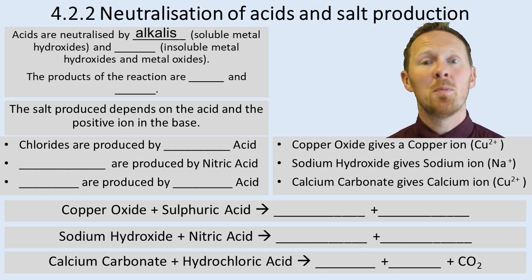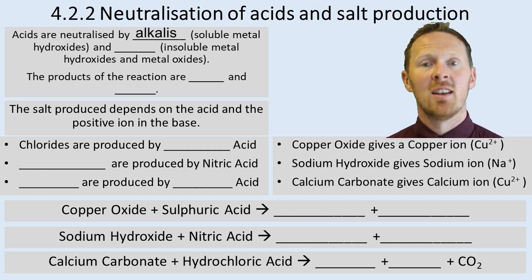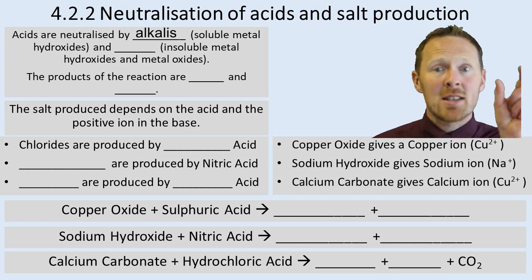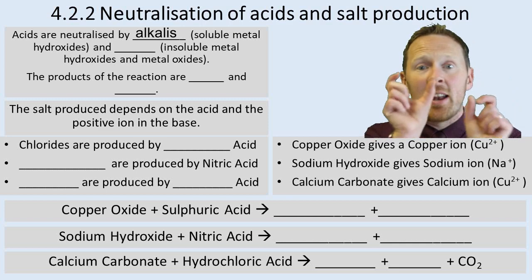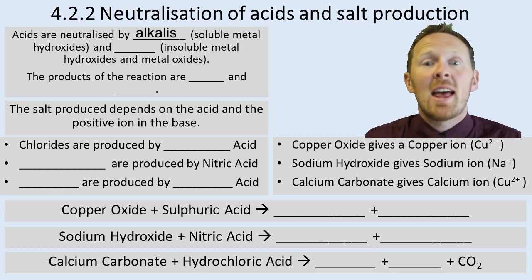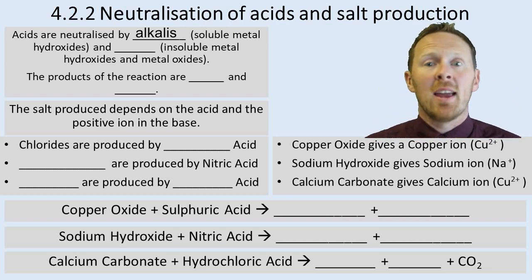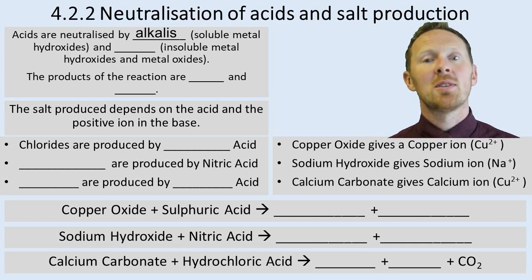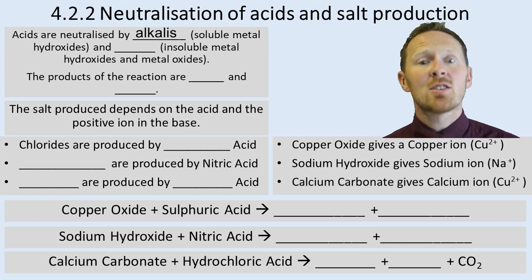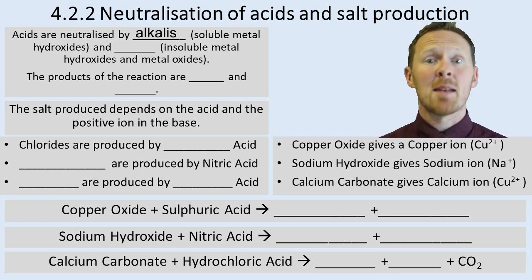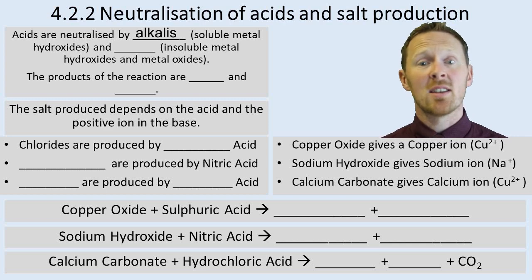Alkalis are soluble metal hydroxides. You can recognise one if it has a metal part and an OH part, and it has AQ in brackets, then you know it's soluble, so you know it's an alkali. Insoluble metal hydroxides and metal oxides are given another name — they're called bases.